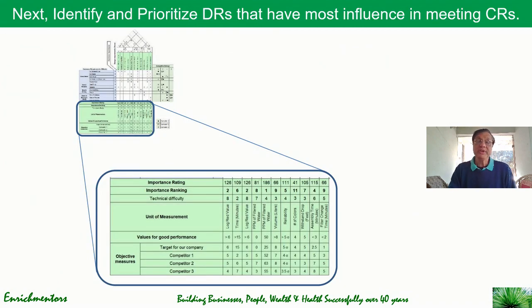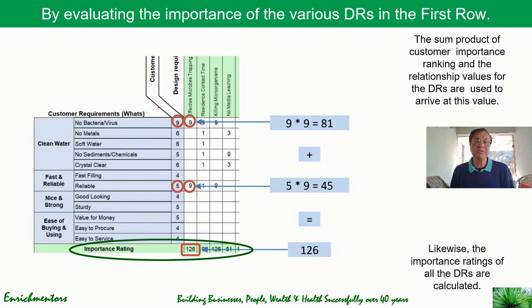With that, we now go to the bottom of the house where we identify and prioritize the design requirements that have the most influence on meeting the customer requirements — DRs and CRs standing for design requirements and customer requirements respectively. It is more of a mathematical process: we take one design requirement at a time, look at wherever we have given a relationship matrix score of 1, 3, or 9, and multiply with the corresponding customer importance rating to arrive at a weighted total score — an importance rating at the bottom.